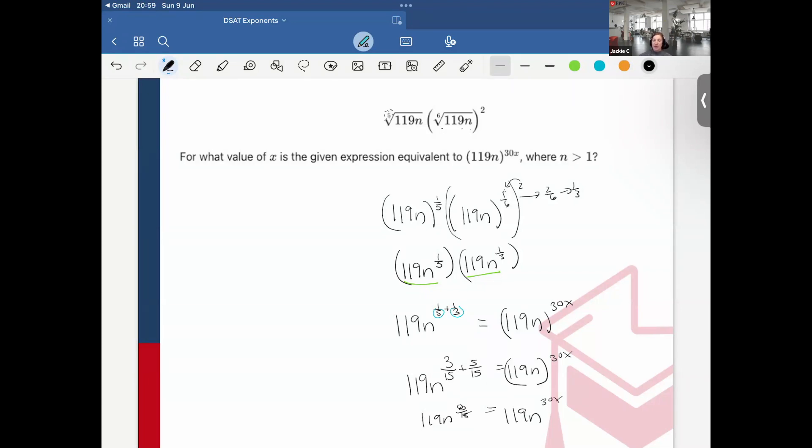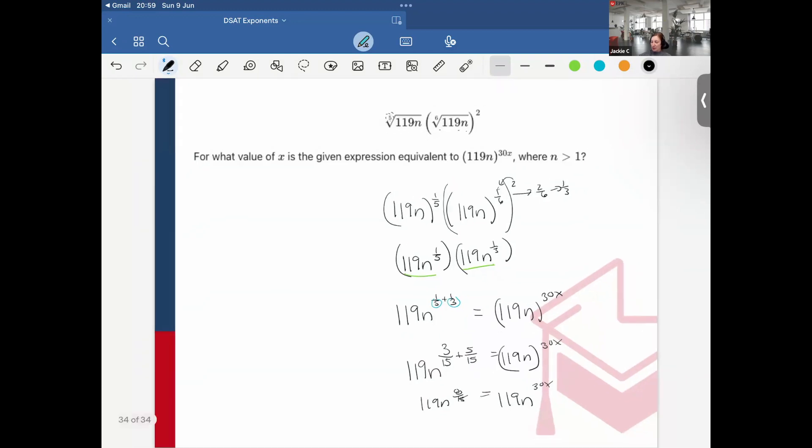So remember, I have the bases. They are the same. When bases are the same, I can simply take the exponents, 8-fifteenths, and set it equal to 30x. I will do that over here. So 8-fifteenths is equal to 30x. Cross-multiply. This will give me 8 equals 450x.